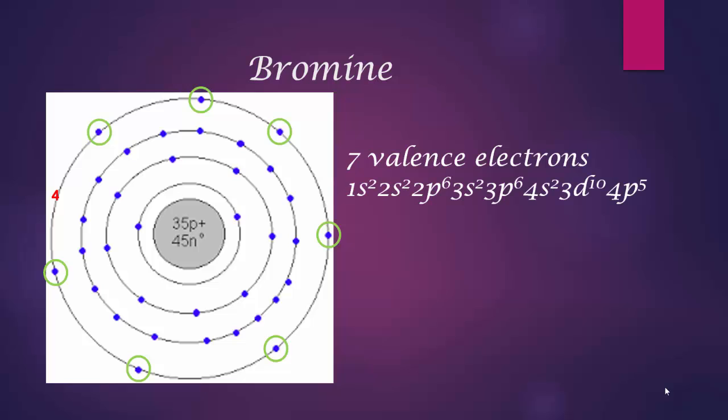Here is the electron configuration. And if you look at the outermost electrons in the fourth energy level, you see that there are 2 in the s orbital, 5 in the p orbital. 2 plus 5 equals 7. 7 valence electrons.